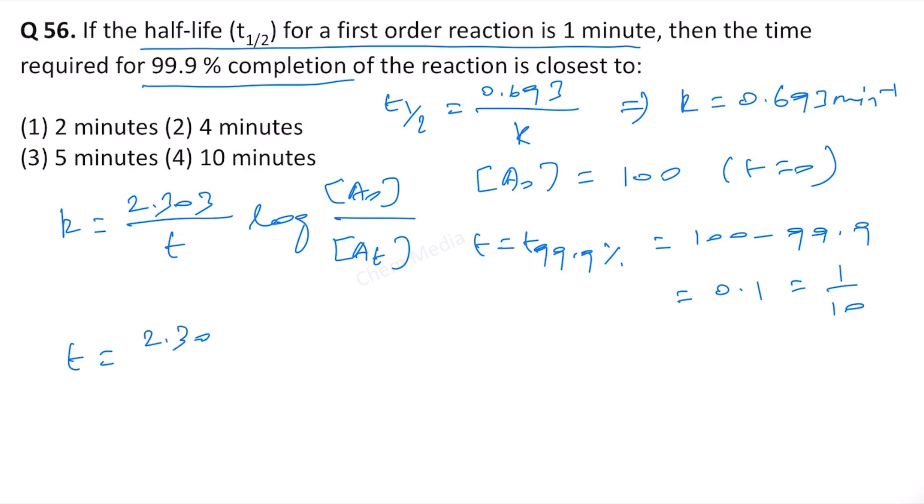Therefore t is equal to 2.303 divided by k, which is 0.693 per minute, log A0 is 100 divided by At is 1/10. So let's bring this 10 up. If we do that, this will become log 1000, which we can write as log 10 to the power 3, and we can bring this 3 to the front.